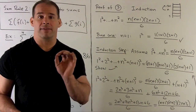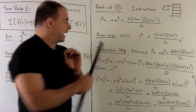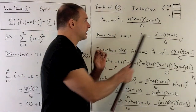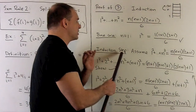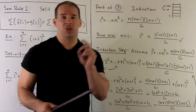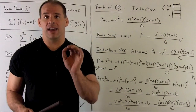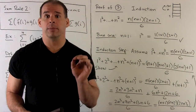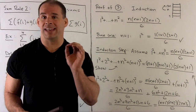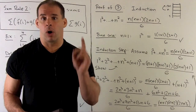So we have the base case, which gets us on the ladder, and the induction step, which tells us how to get from rung n to rung n plus 1. So we can get to any n that we want.